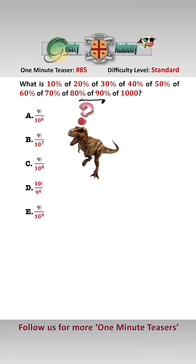Okay, so we need to work backwards from here through the various percentages. 90% is the same as nine-tenths, so basically 90% of 1000 is nine-tenths of 1000. And 80% of that, well 80% is the same as eight-tenths, and 70% of that is the same as seven-tenths.